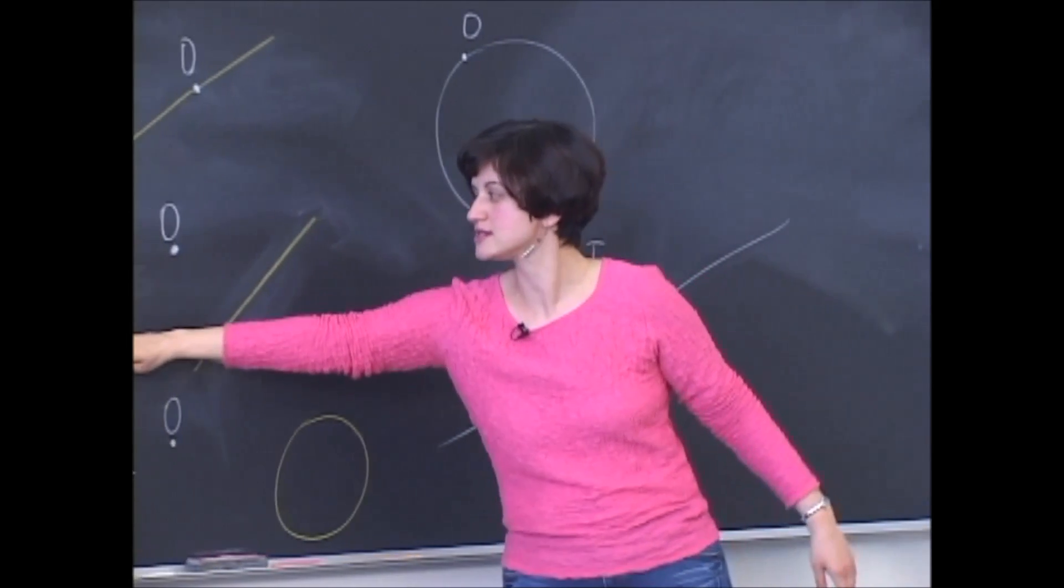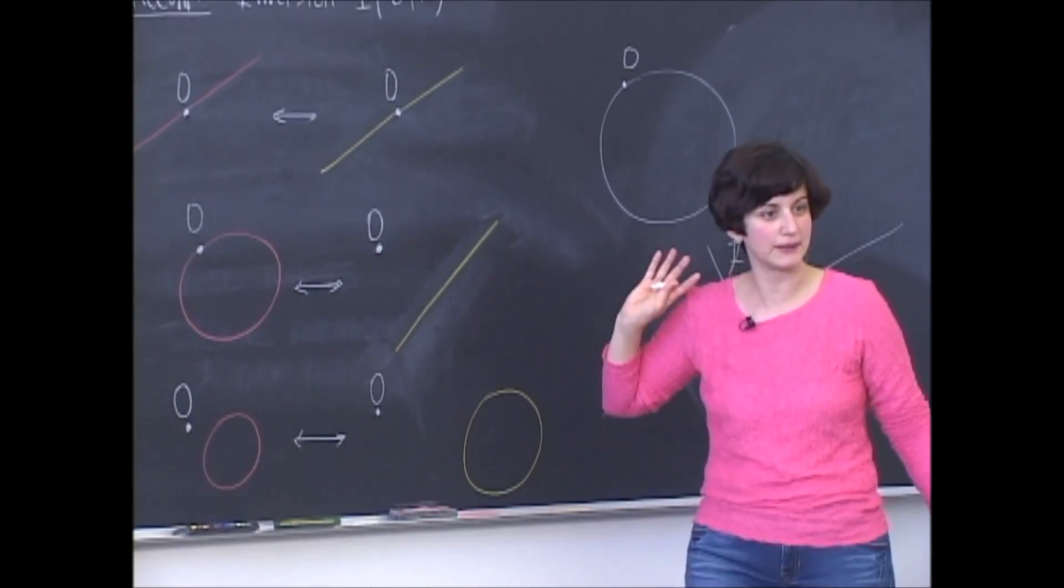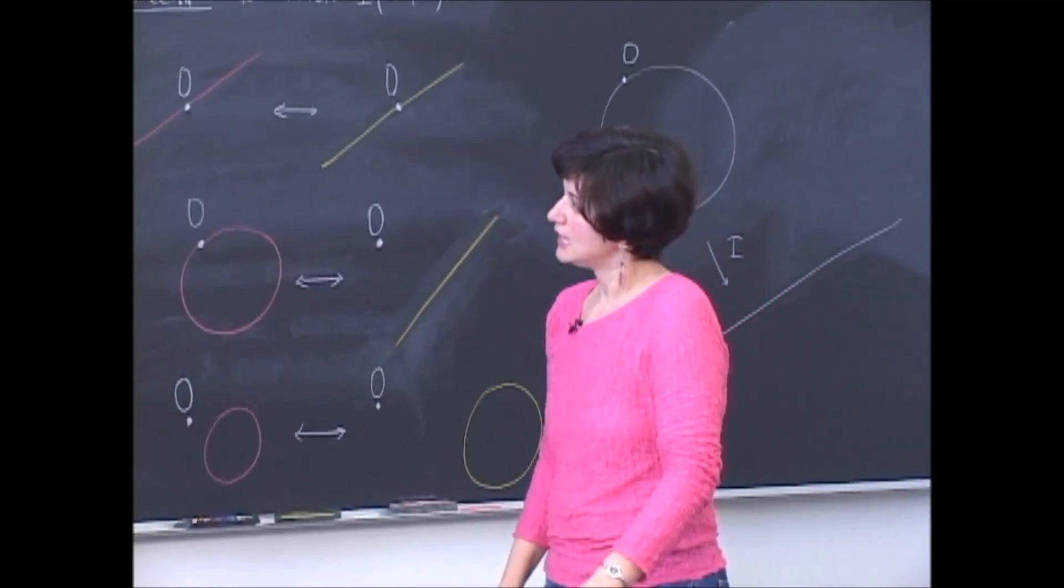So then we are in the second situation. A central circle goes into a line.